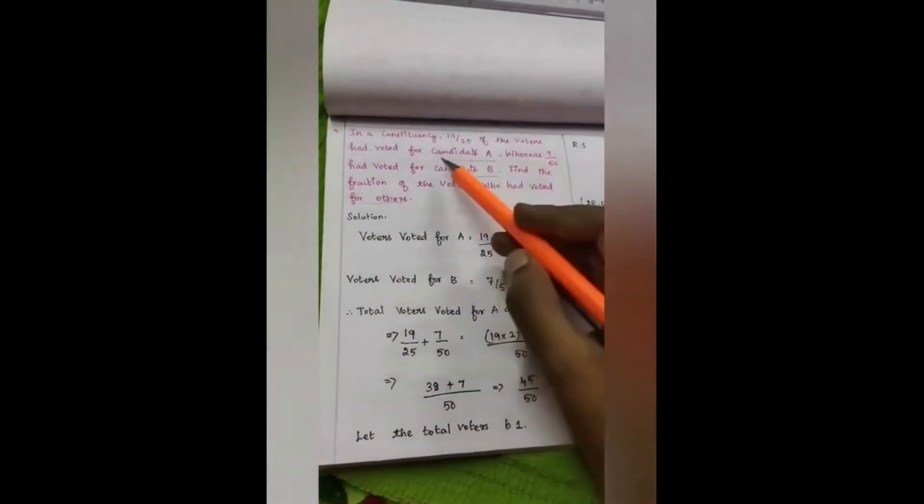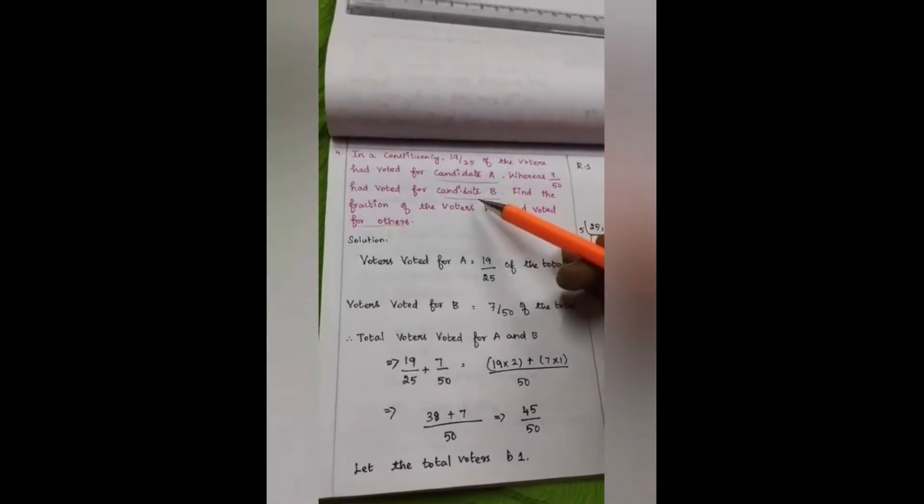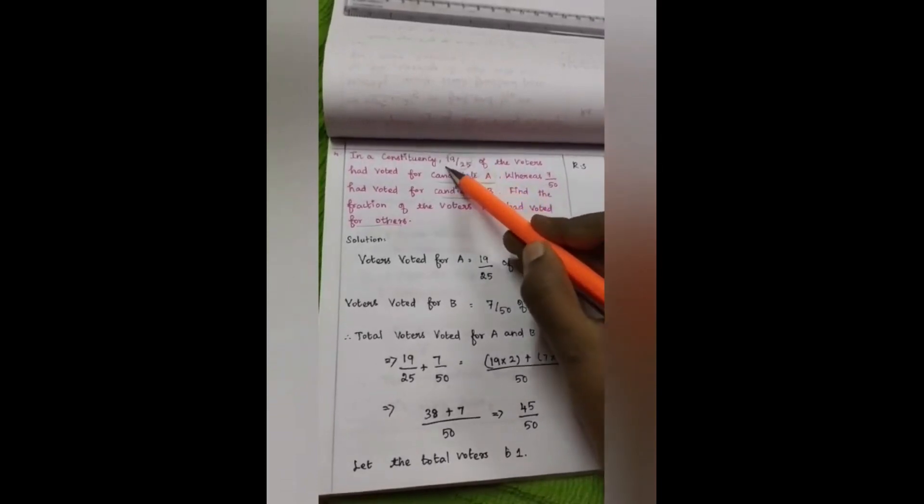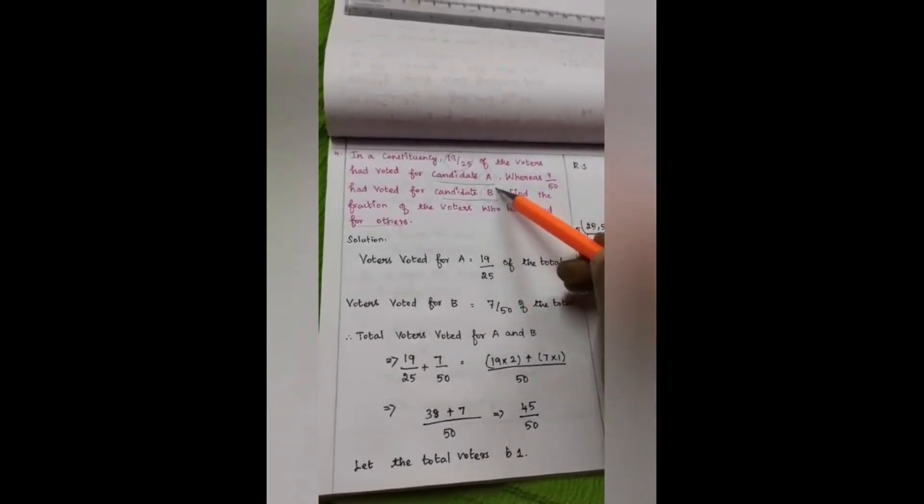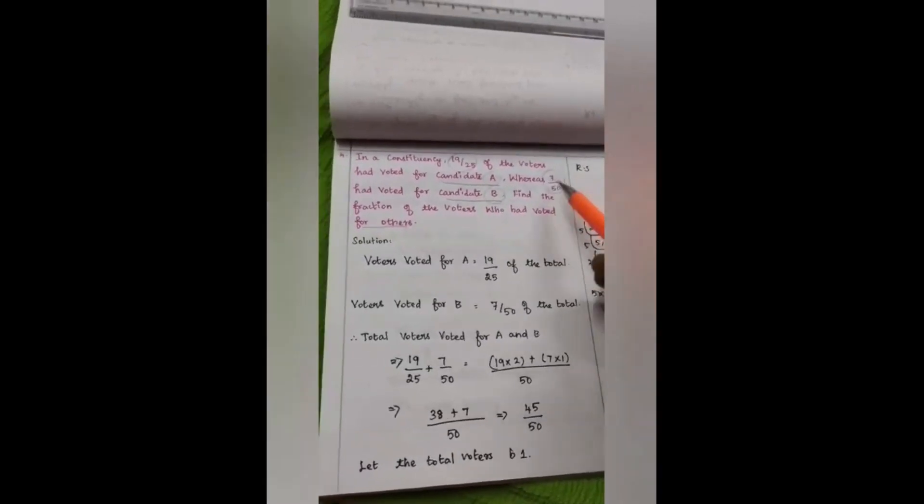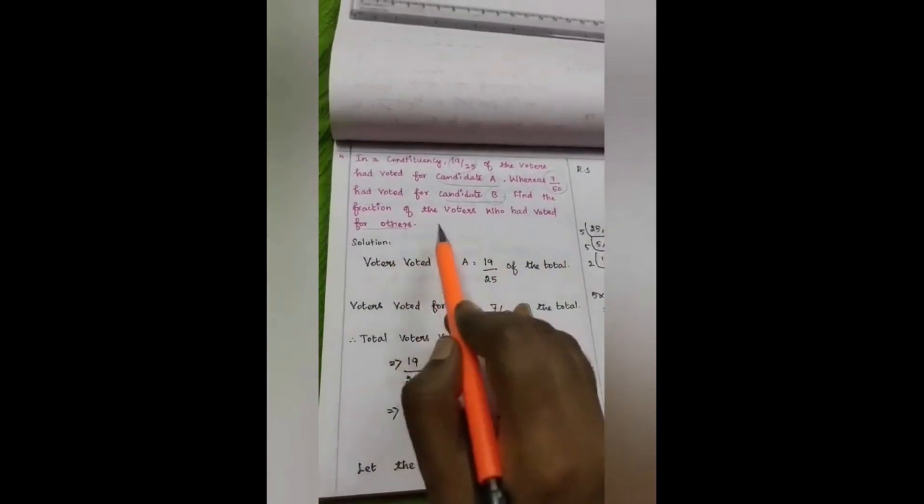See, here the election happened between 2 candidates. For candidate A, this percentage of vote has been recorded. For candidate B, this percentage of vote has been recorded. What they tell us to find? We have to find the voters who had voted for others. Let's find that solution.